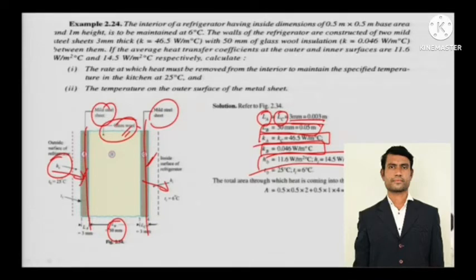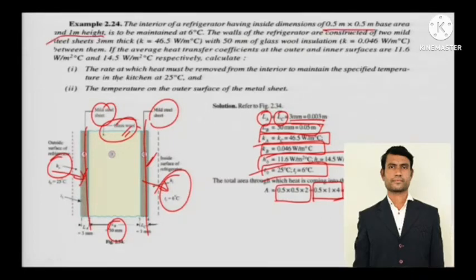TO is the outside temperature, the ambient temperature, which is 25 degrees Celsius. TI is the inside temperature of the refrigerator, which is 6 degrees Celsius. The total area through which heat is coming into the refrigerator is 2.5 meter square. This is calculated as 0.5 into 0.5 into 2, which is the base area and front area.